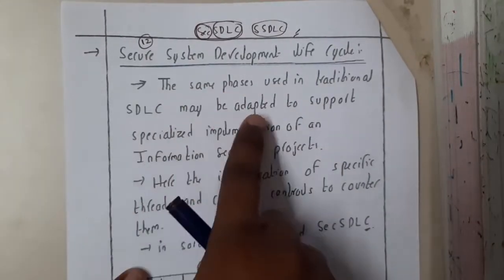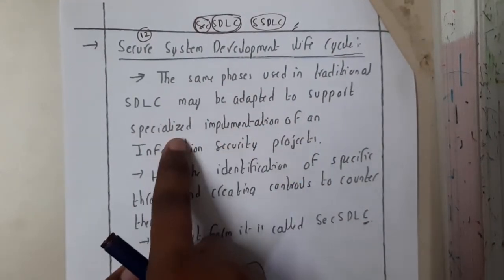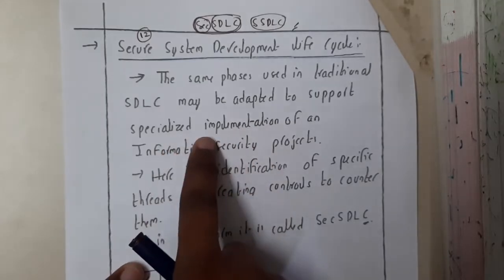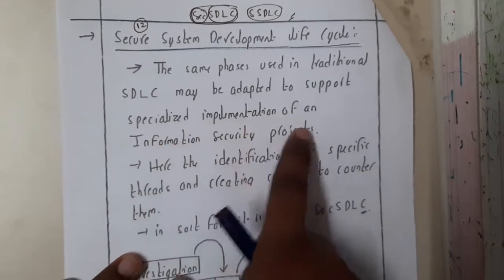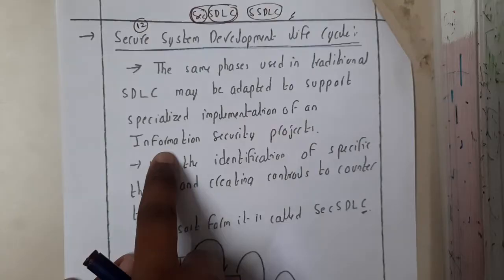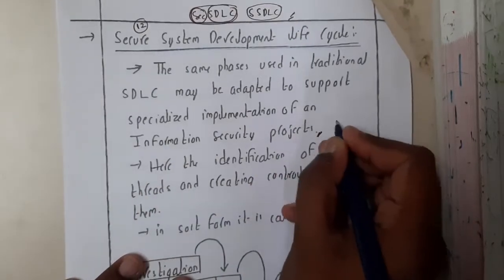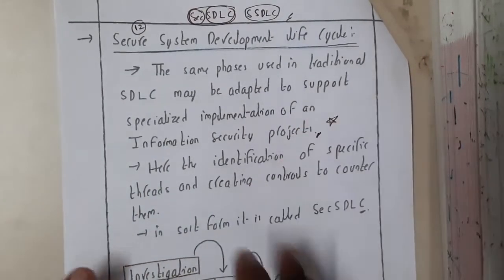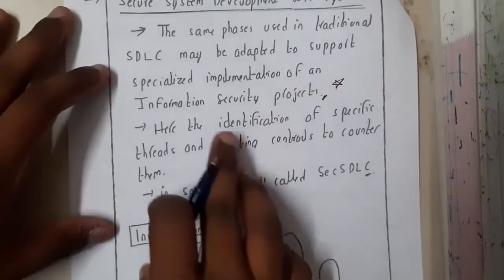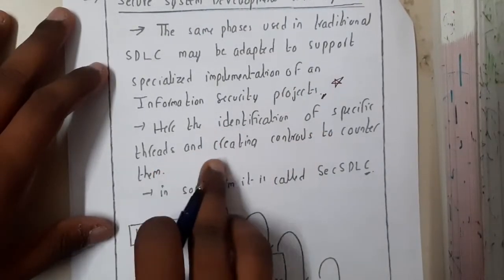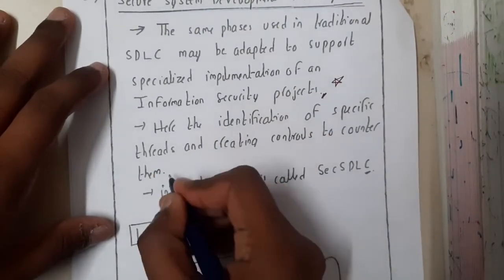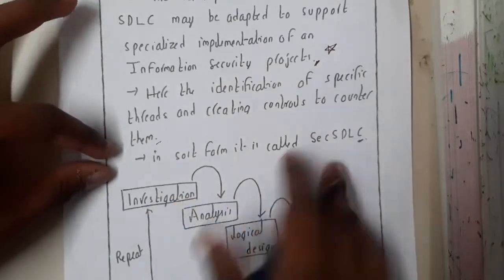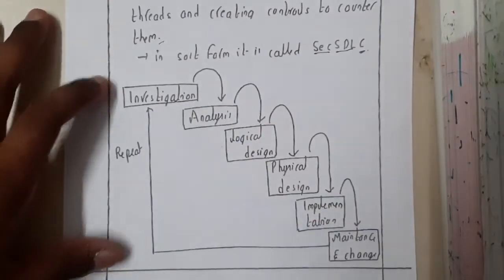Let us continue. The CMO phases used in a traditional SDLC may be adopted to support the specialized implementation of a project with information security. Basically, our goal is to add security. Here the identification of the specific threat and creating control to counter is done here. So in short form it is called as a Secured SDLC.